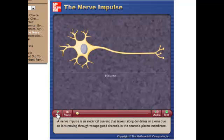A nerve impulse is an electrical current that travels along dendrites or axons due to ions moving through voltage-gated channels in the neuron's plasma membrane.